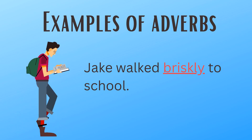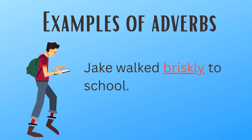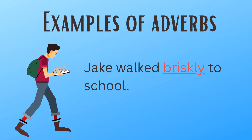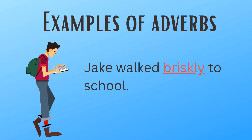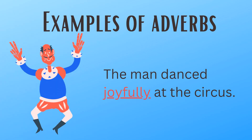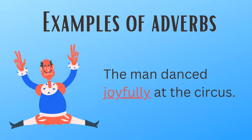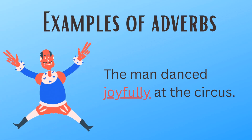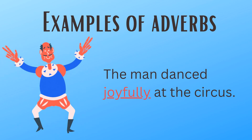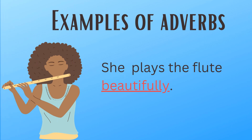For example, Jake walked briskly to school. Briskly is the adverb in this sentence — it describes how Jake walked to school. The man danced joyfully at the circus. Joyfully is the adverb in this sentence — it describes how the man danced. And she plays the flute beautifully. Beautifully describes how the flute is played.